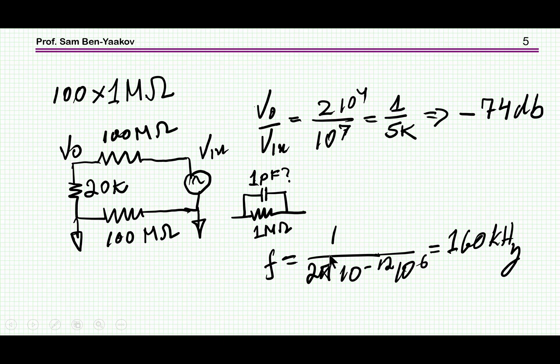Now if we assume that each of the 100 resistors has a capacitance of say one picofarad, then the breakpoint is 160 kilohertz, which is quite a bit if it is so. This is just a marker to get a feeling of where we are.